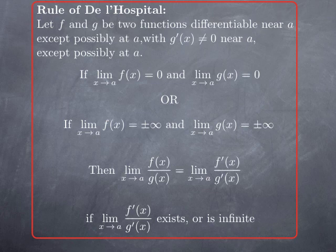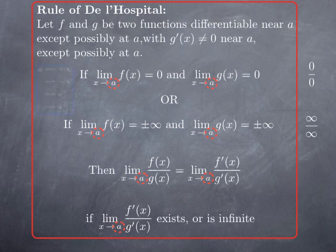This holds whether the limit of f'/g' is a finite number or is infinite. The first case — both limits are 0 — corresponds to the undetermined limit 0 over 0; the second to infinity over infinity. Also, a where we consider the limits could be infinite: we can have versions of the statement for a equals positive or negative infinity, and versions for one-sided limits, replacing all instances of a with a⁺ or a⁻.